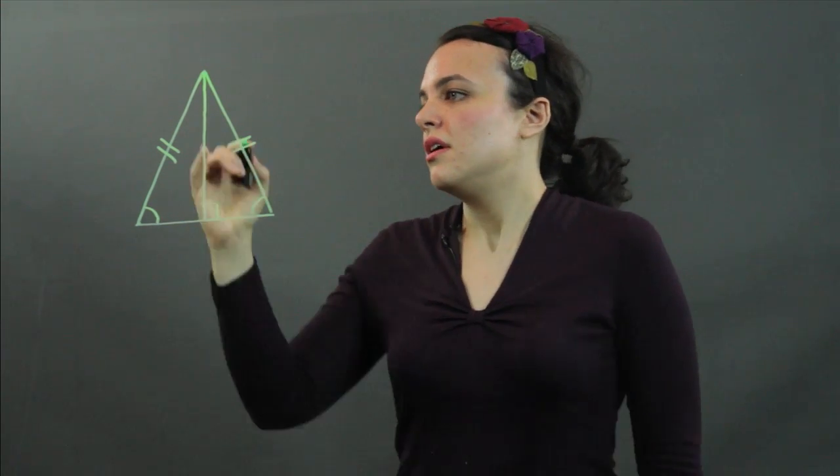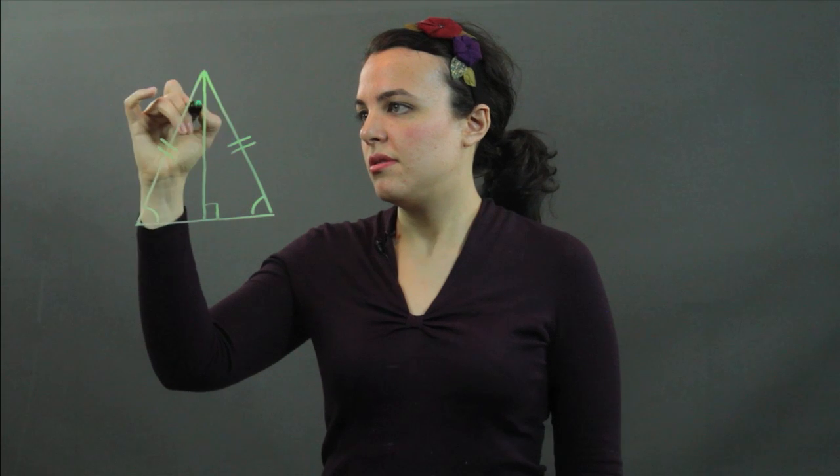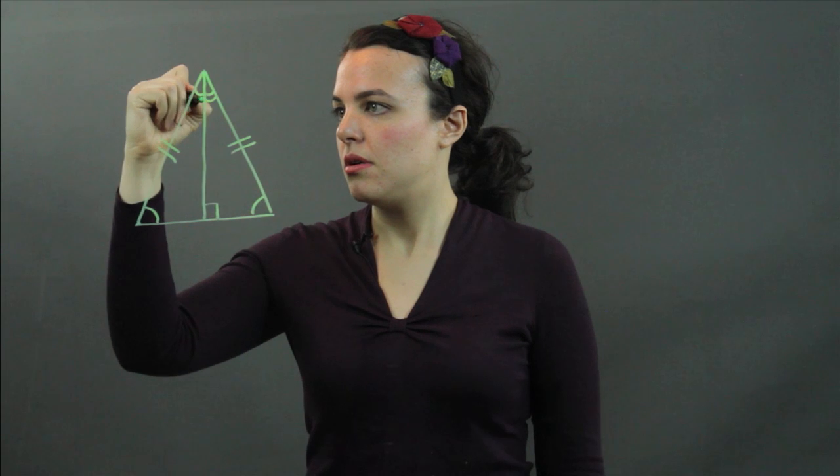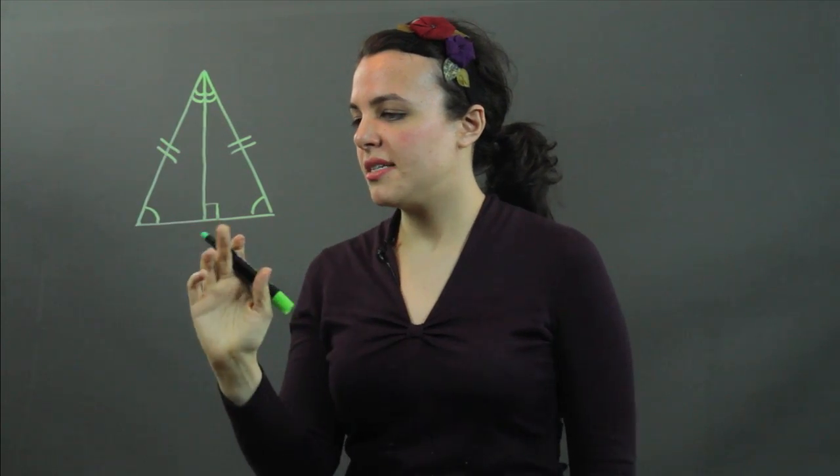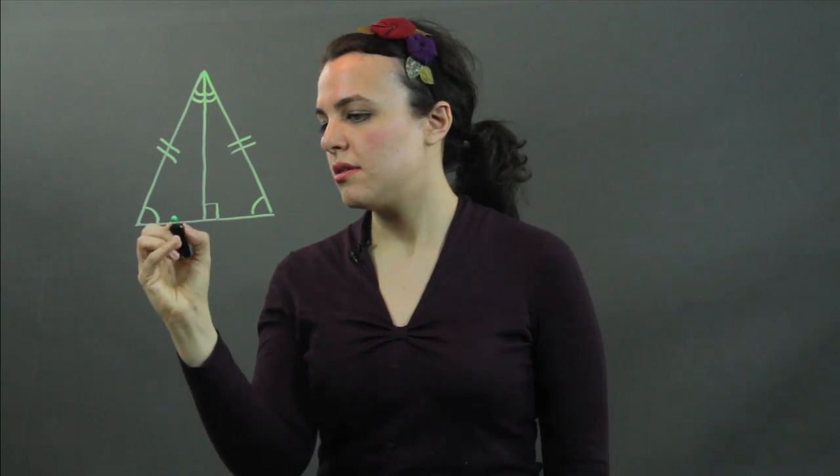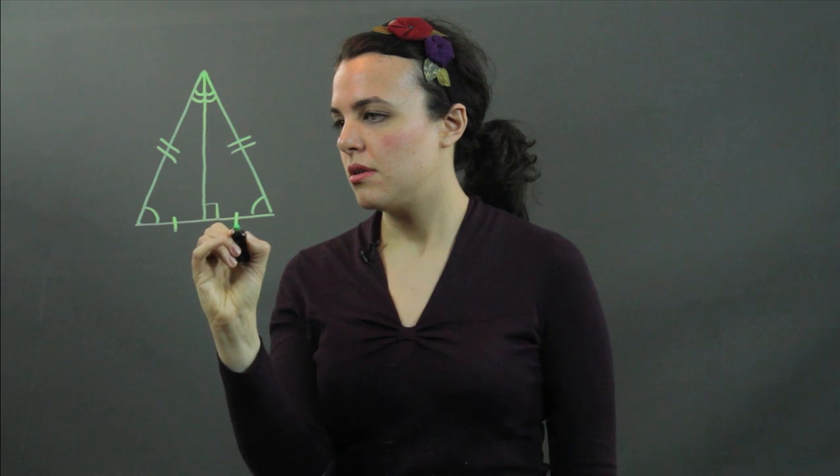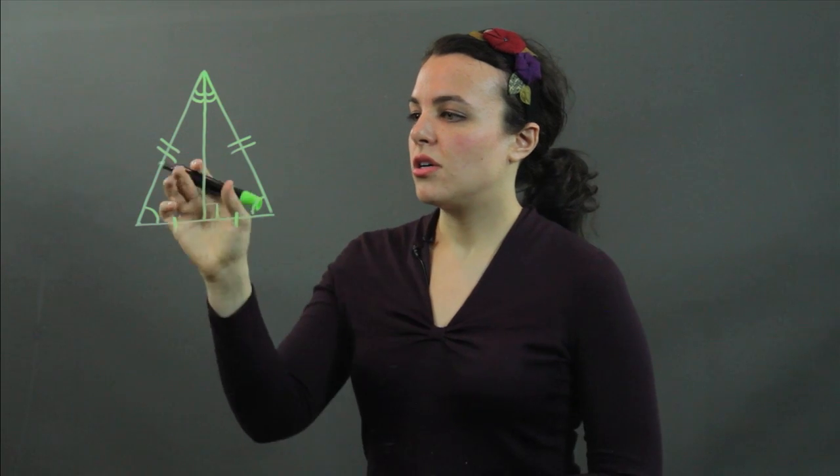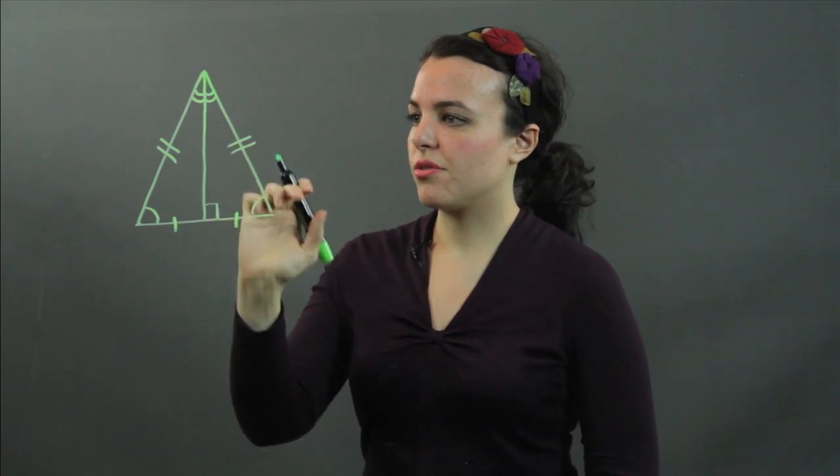What this does is we've cut this angle into two smaller congruent parts. We've bisected this base and what we have here are two smaller congruent triangles.